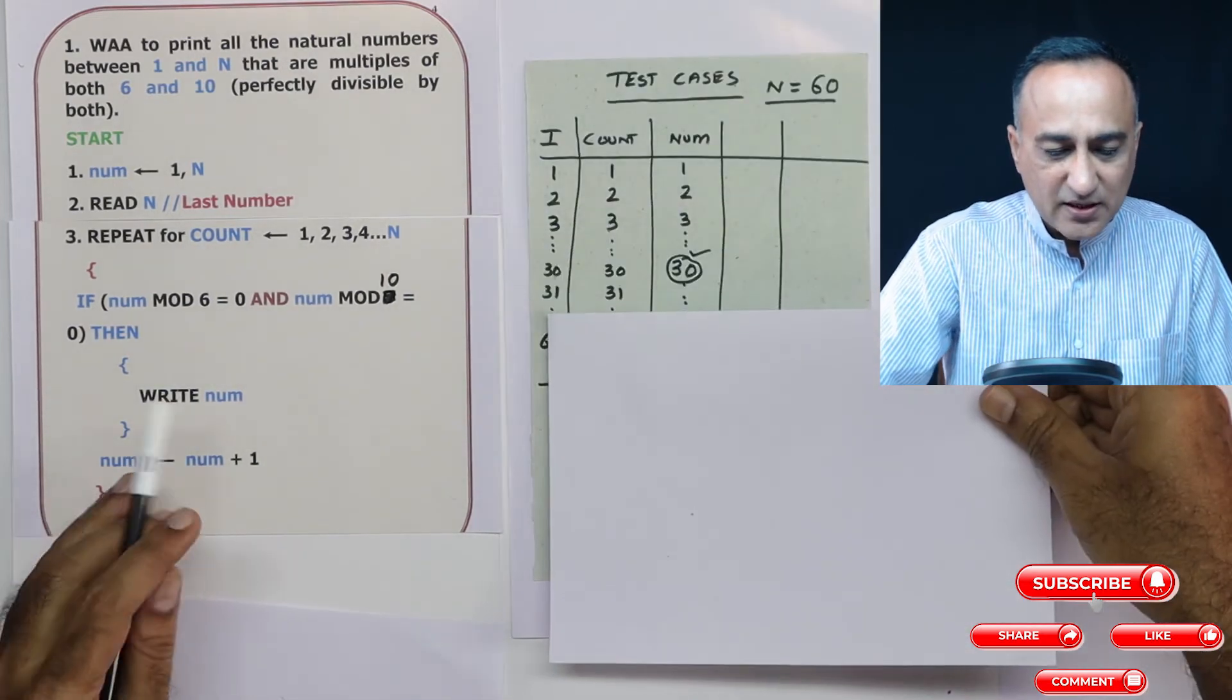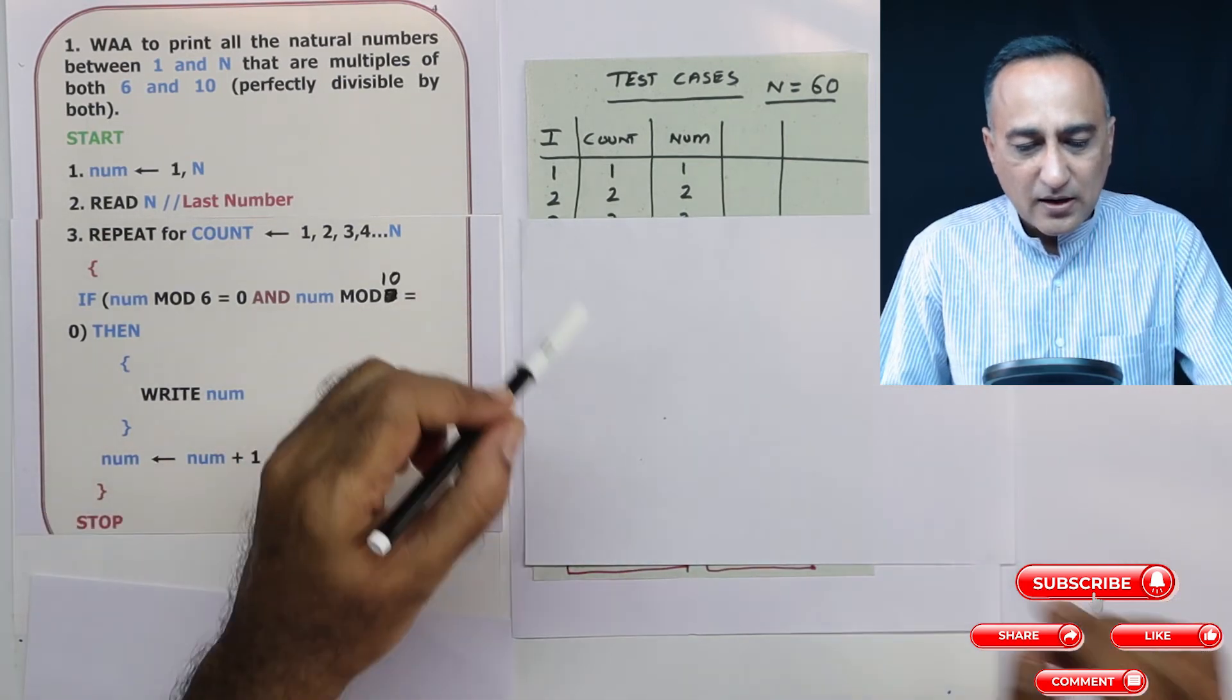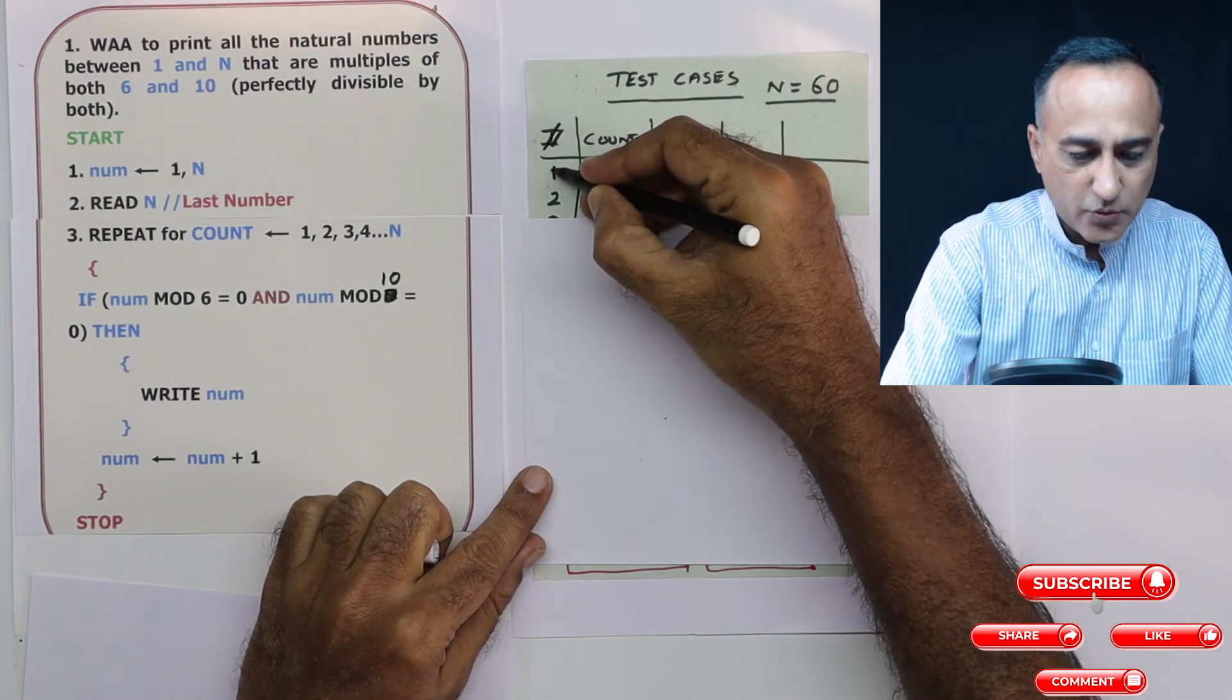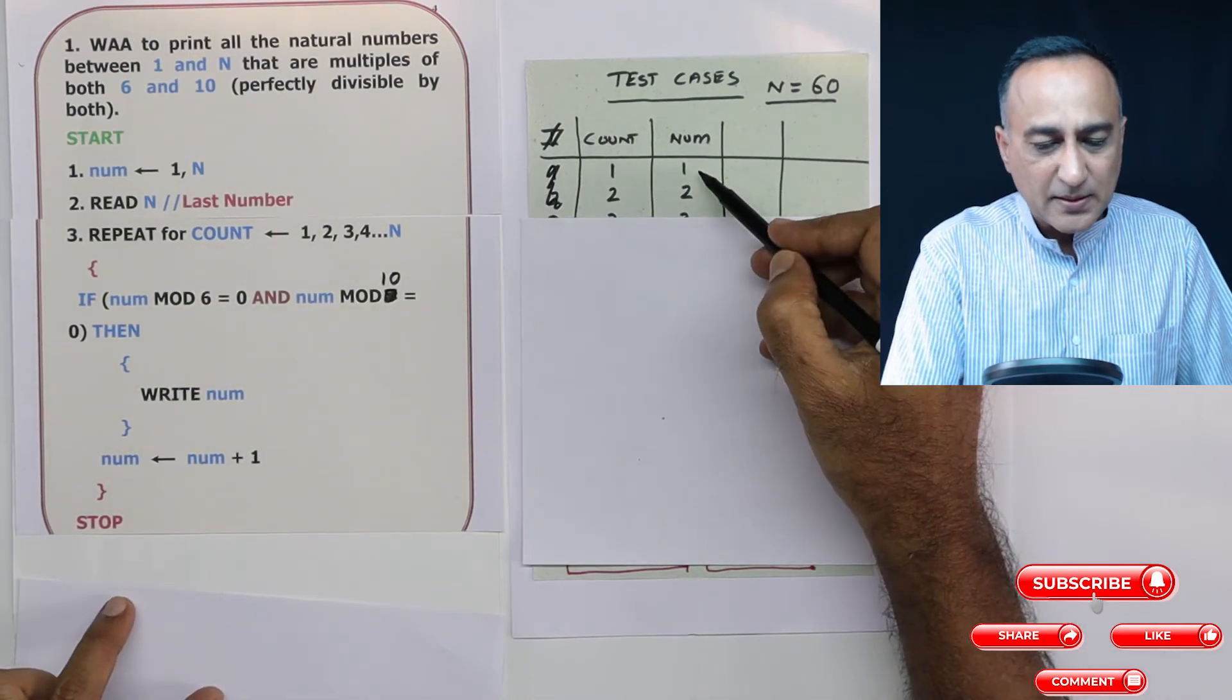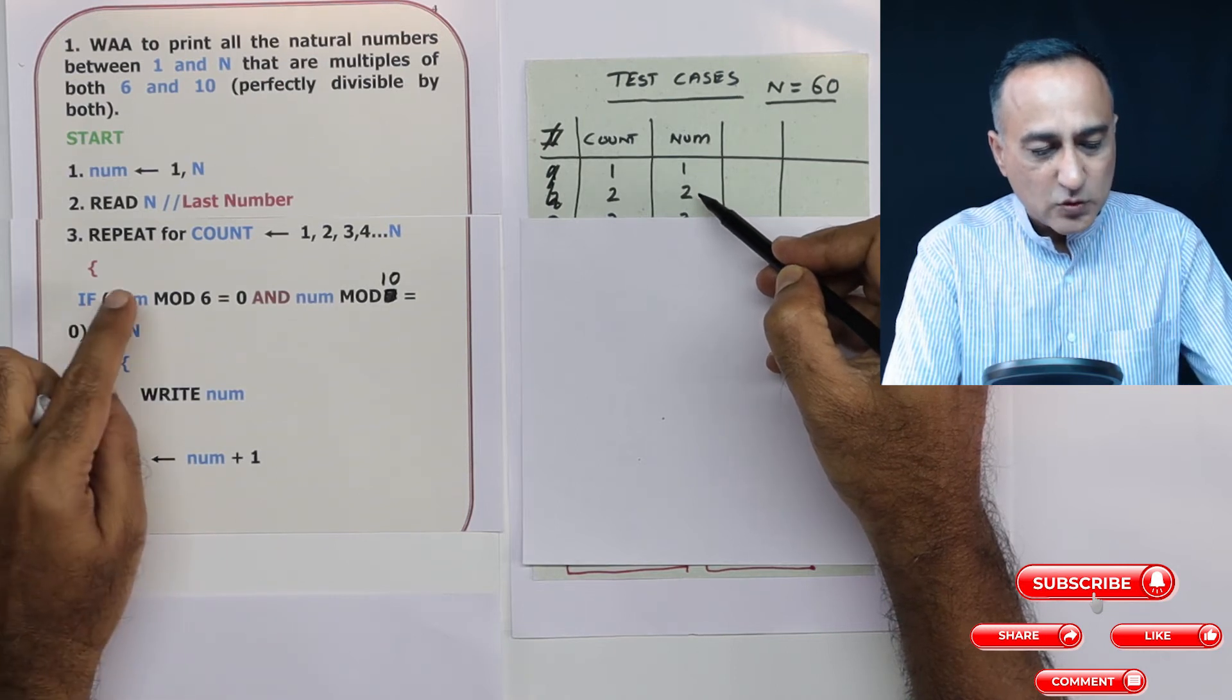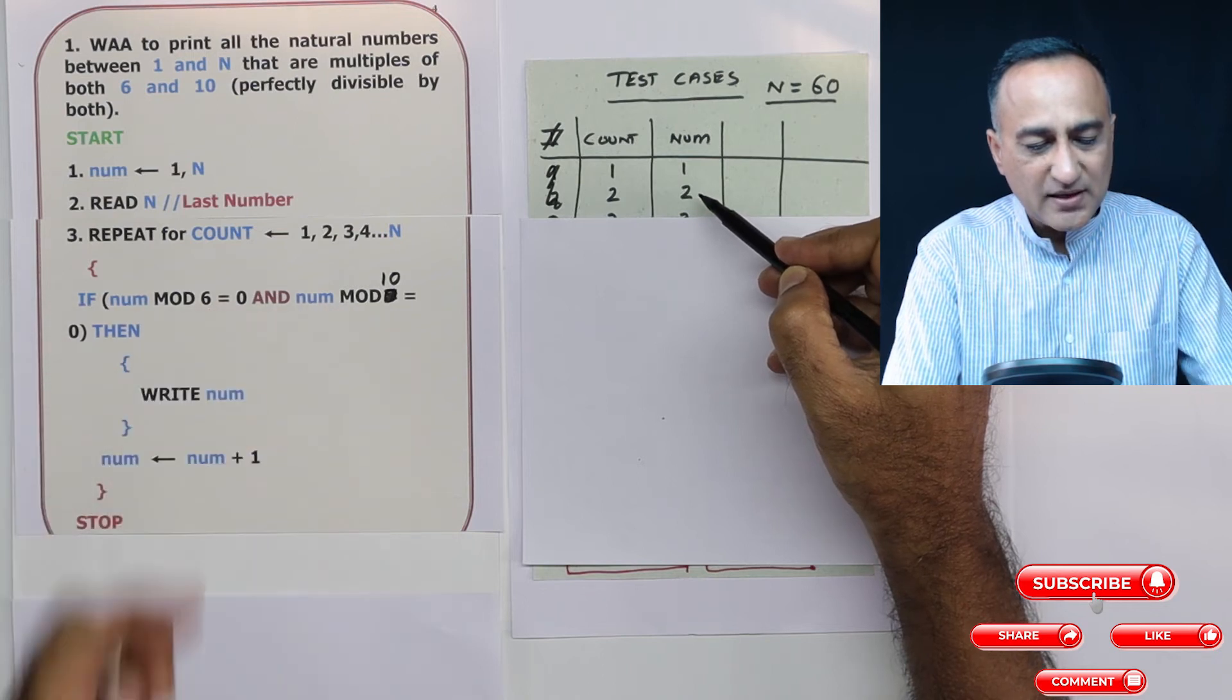So let's take a look here. Count is one, number is one, one did not get printed. Now number has become two. So when I'm coming here, two mod six, the remainder is two. Two mod 10, the remainder is two.